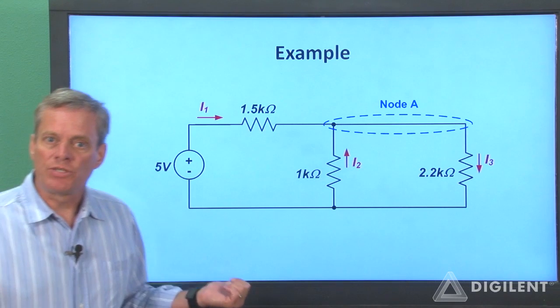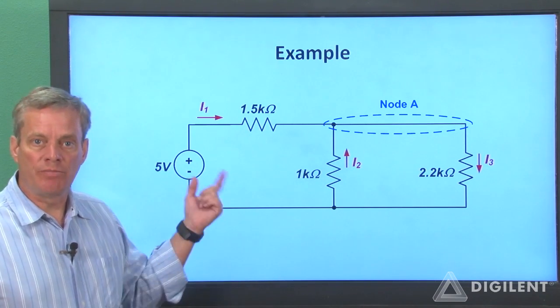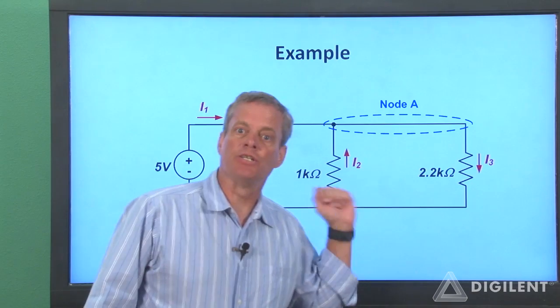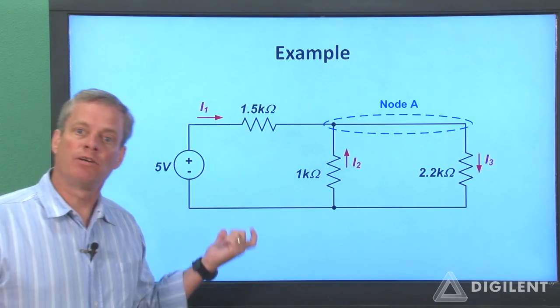Now let's wire up the circuit and measure our currents, being sure to make our measurements consistent with our reference directions. Then we can add the currents up to verify KCL.